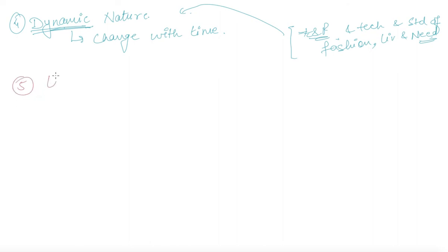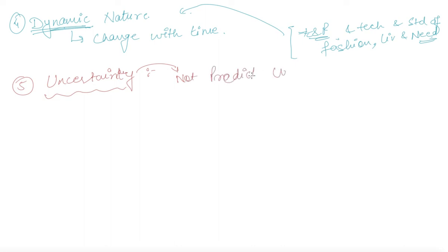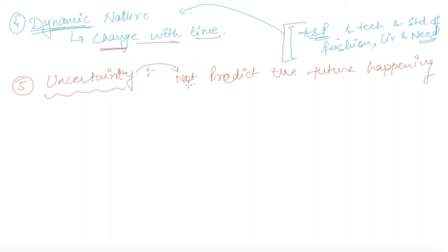Your next feature of your business environment is uncertainty. By uncertainty, we mean that which is not certain — one cannot predict the future happenings. As we already discussed, there are factors which keep on changing from time to time. Thus, one cannot predict when the fashion will change, when the technology will change, or when the needs and wants of customers will change. Thus, business operations are also uncertain as they are dynamic, and one cannot predict when dynamic steps are required to be taken for uncertain events.